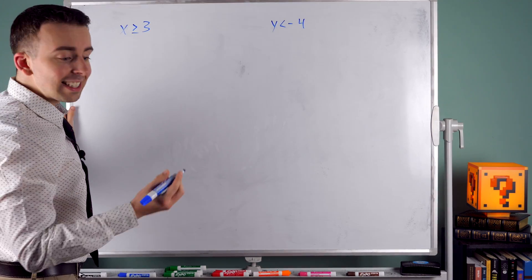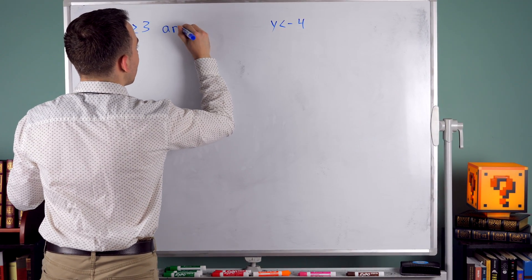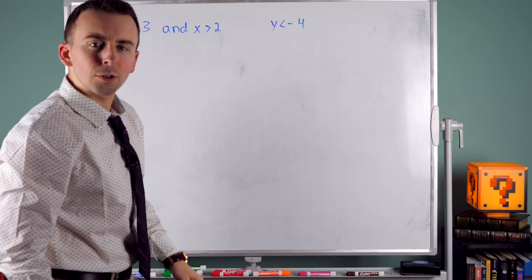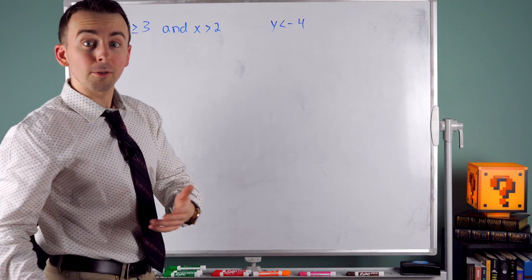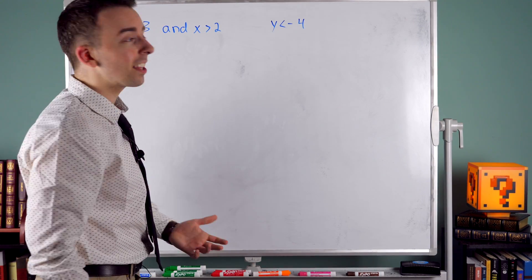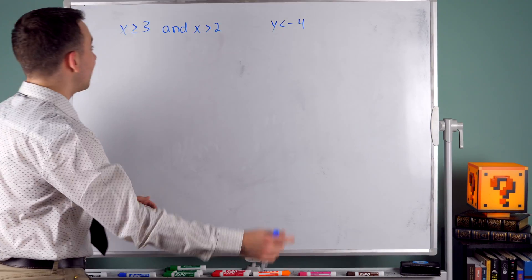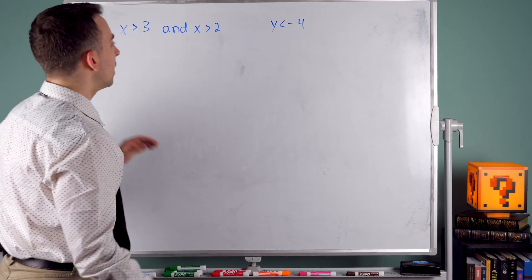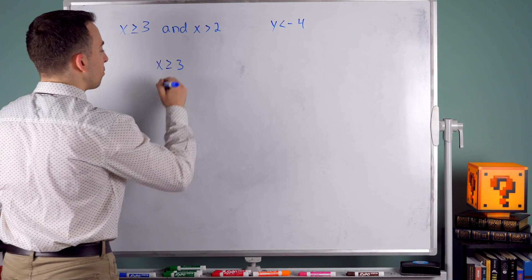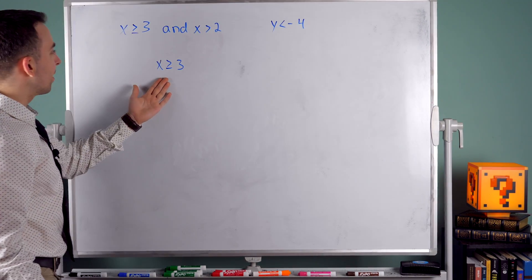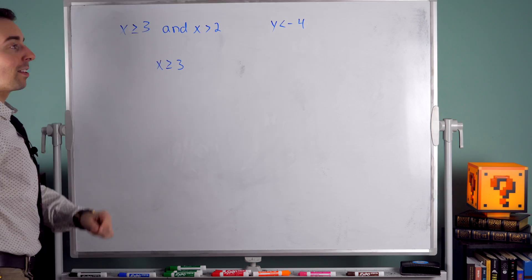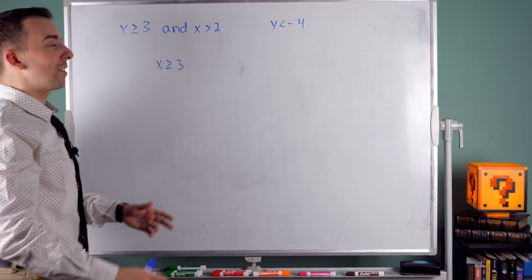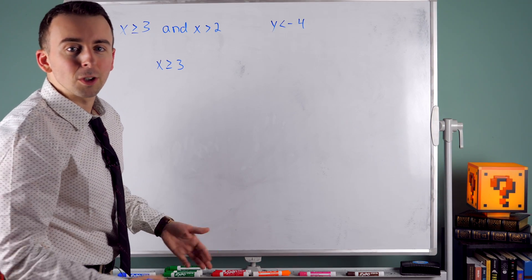We could say that x is at least 3 — and I'm going to test you here — and let's say x is greater than 2. Would that make sense to write? Well, we could write it. There's nothing inherently wrong with it, but it's kind of pointless, because any number that is at least 3 is also greater than 2. If we just wrote that x is greater than or equal to 3, that would be referring to the same numbers. Any number that's at least 3 is greater than 2, so by saying 'and x is greater than 2,' we haven't really included any additional information.